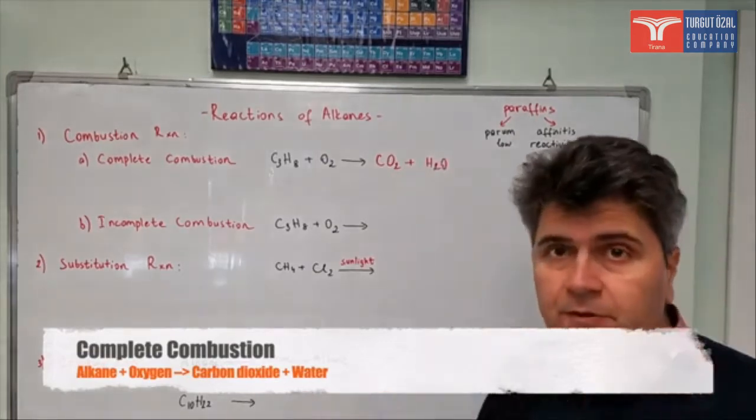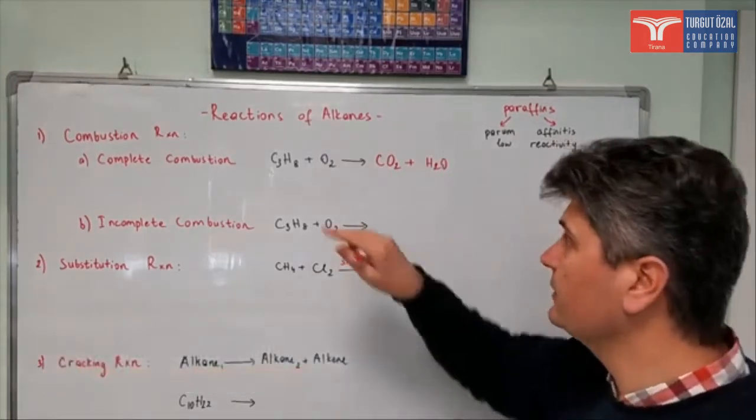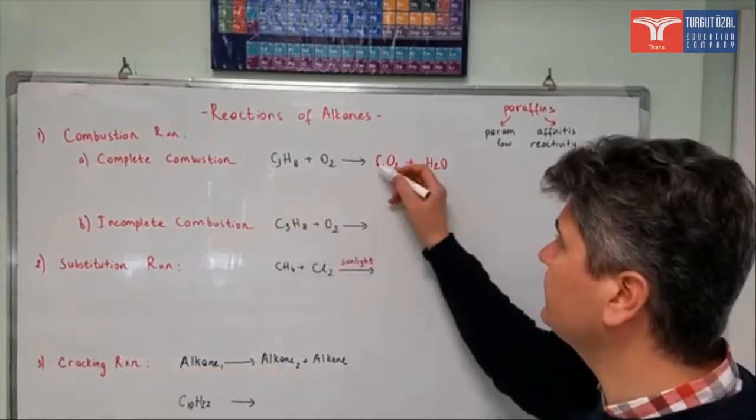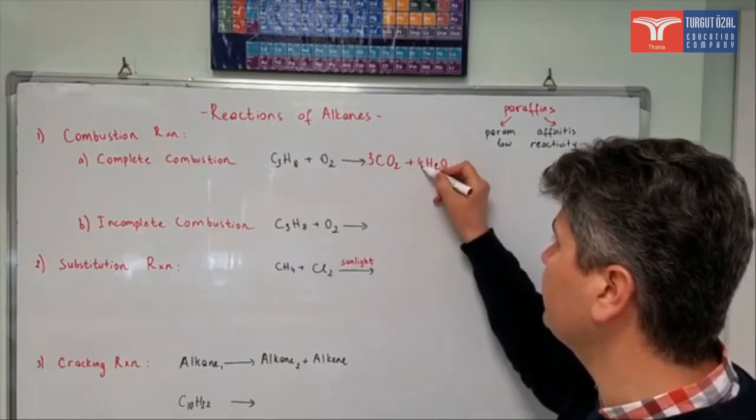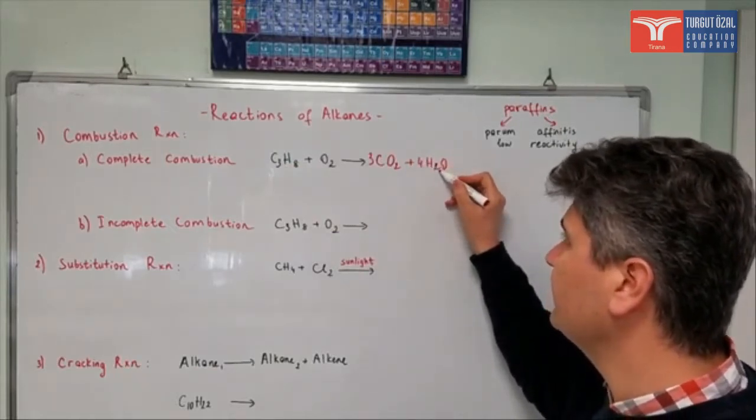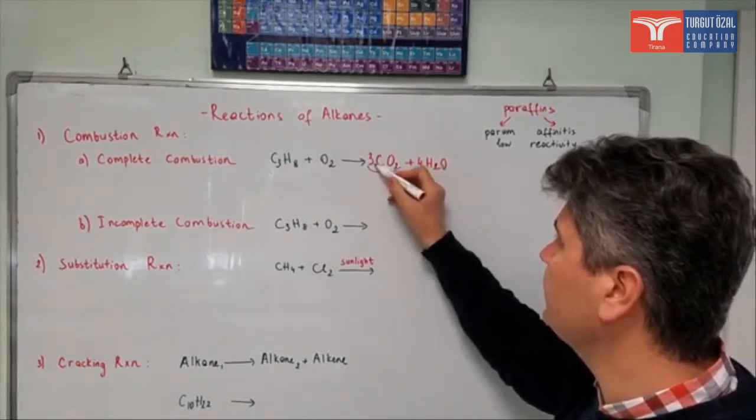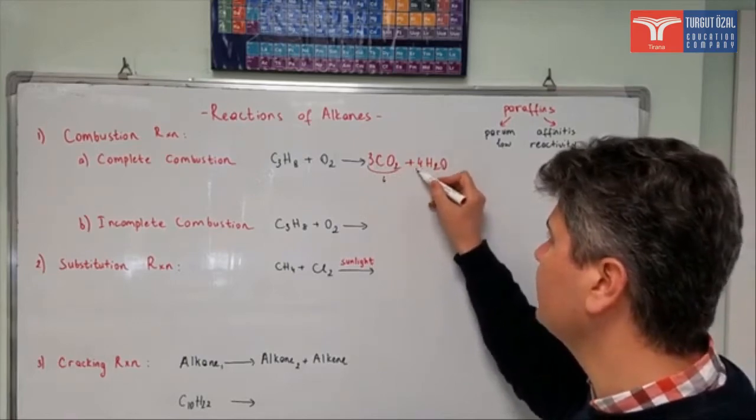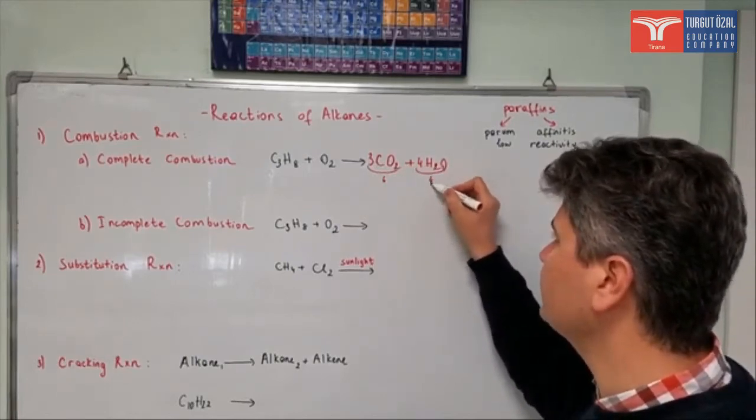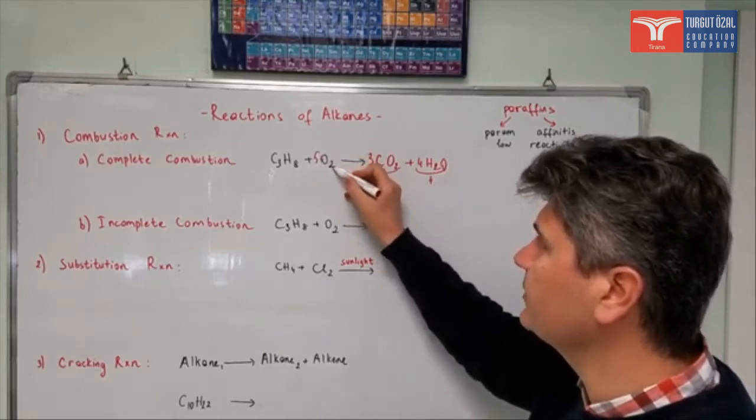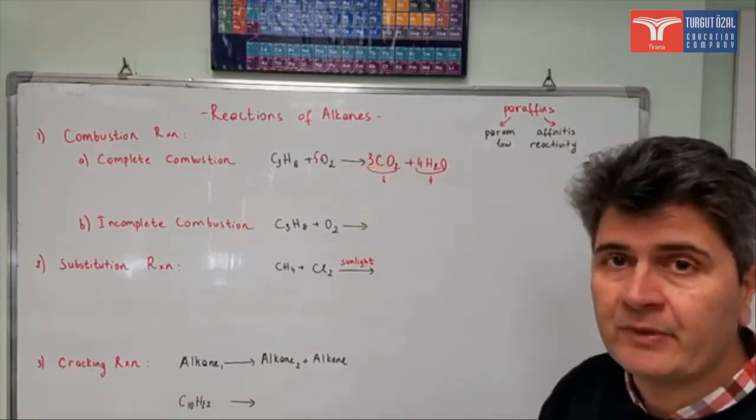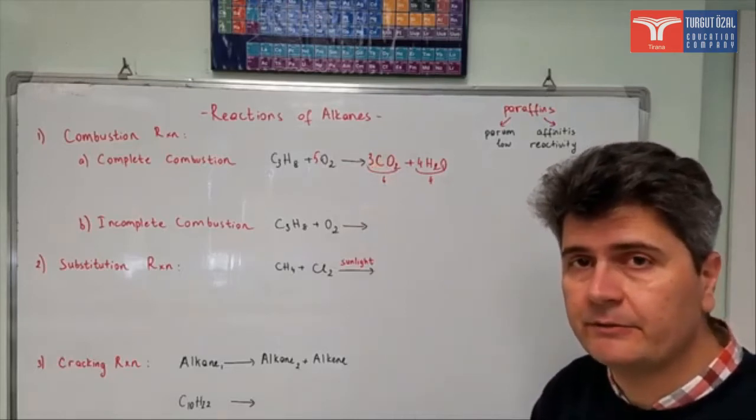Of course we need to balance our reactions all the time. So we have three carbon atoms, I need to have three. Eight hydrogens in here, so I need to write here four. Four times two is eight. Then oxygens, I have three times two, six oxygens. Four times one, four oxygens. In total it is ten. So I need to write here five times two, it is ten. This is my complete combustion reaction.